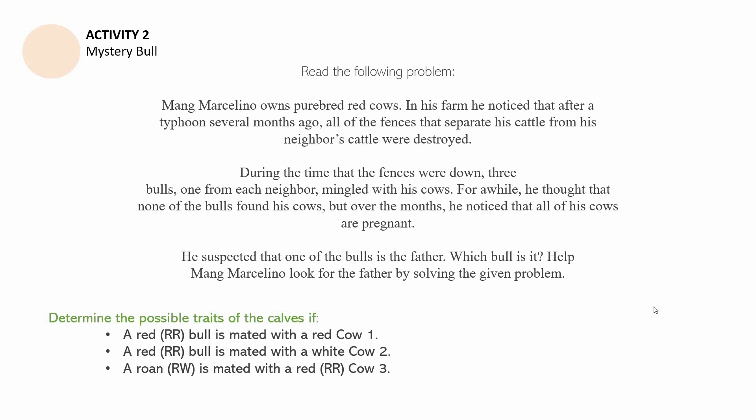Determine the possible traits of the calves if a red RR bull is mated with a red cow, number one. Next is a red RR bull is mated with a white cow, number two. Next and last, a Roan RW is mated with a red RR cow, number three. Note that you have to illustrate your answers through a Punnett square.